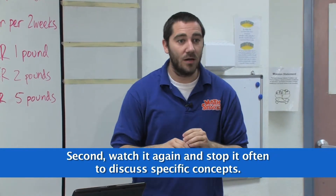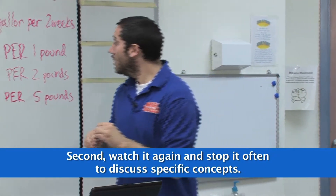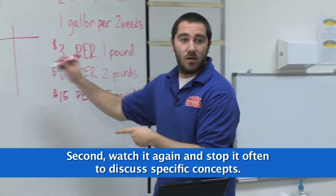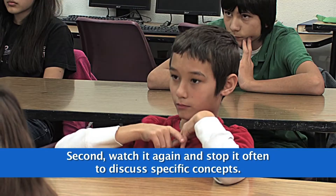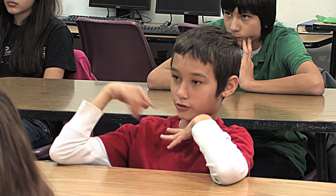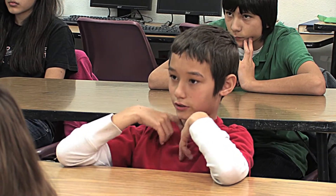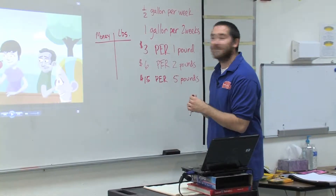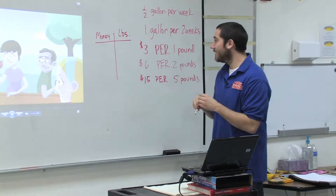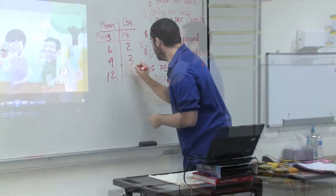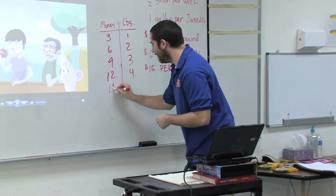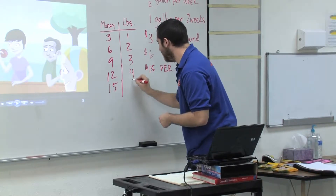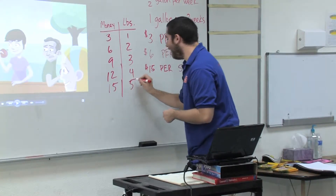How can we set up this t-chart? Brennan? Put money on the left side and put pounds on the other and go by threes. Twelve and four, and so you can find fifteen and five.